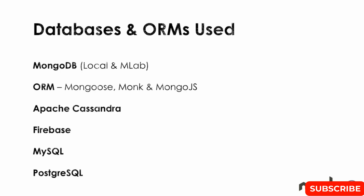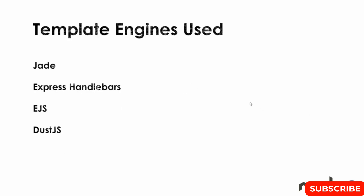We'll also use Apache Cassandra for one project, which is a column database. Firebase is another remote NoSQL database we'll be using, and then MySQL and PostgreSQL, which are both relational databases — I'll show you how we can use those with Node.js as well.